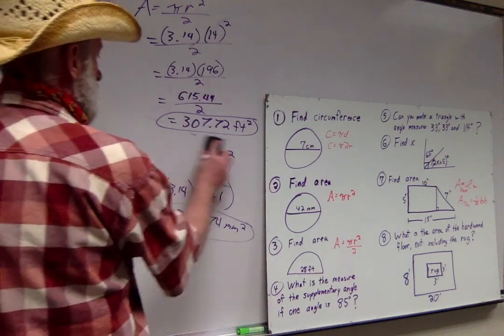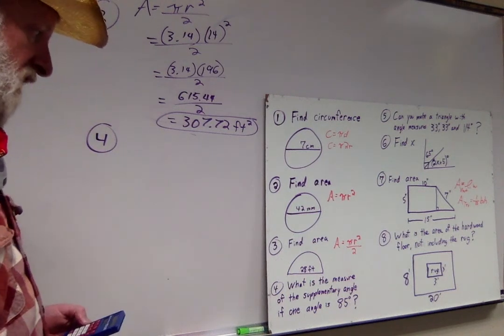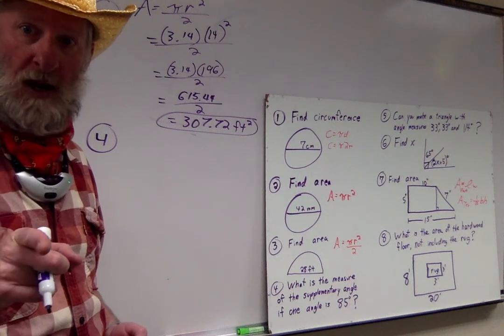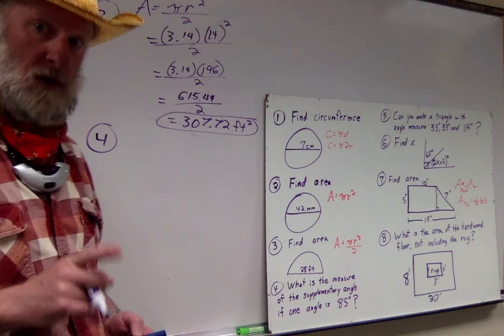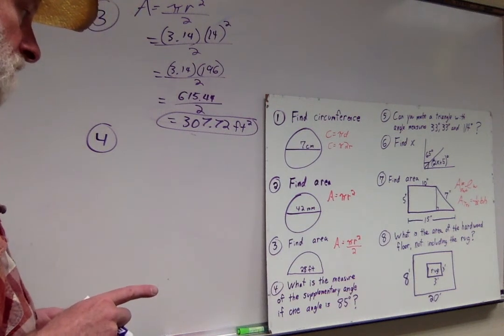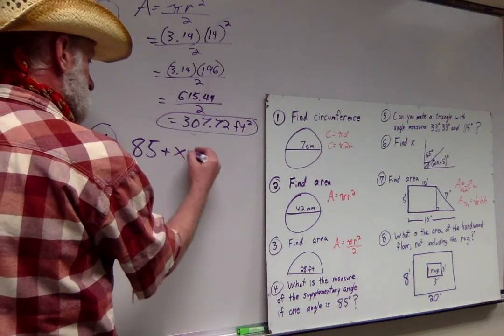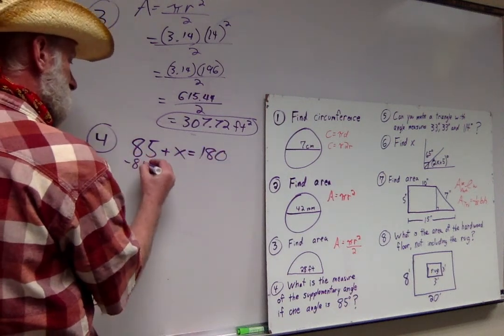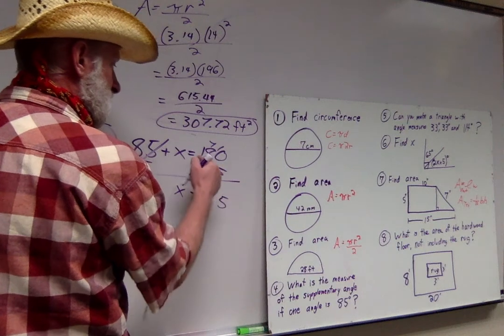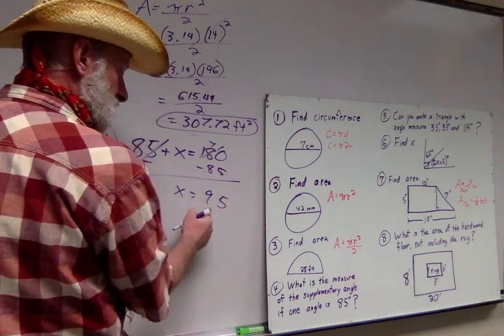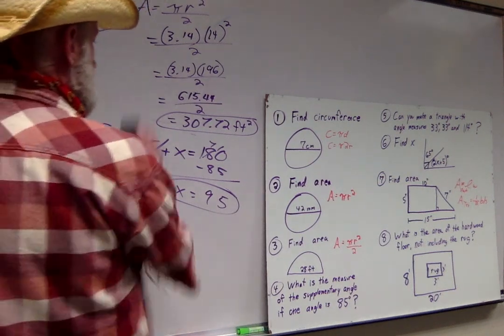Number four says, what's the measure of the supplementary angle? Supplementary angles form a straight line, 180 degrees. What's the measure of the supplementary angle if one angle is 85? We're really saying 85 plus what is 180? If I subtract 85 from both sides, that missing number is 95.